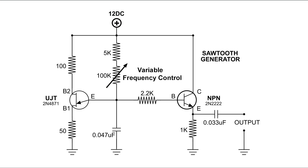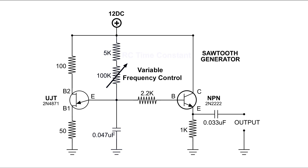The 5k ohm resistor and the variable 100k ohm resistor, along with the .047 microfarad capacitor, make up an RC time constant. Depending on the total resistance and the capacitance in this series circuit will determine how fast or how slow the capacitor will charge or discharge. In this circuit we're really only concerned with how fast it charges, because the unijunction transistor is going to discharge the capacitor.